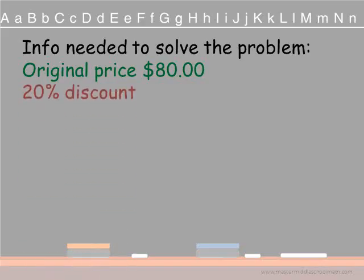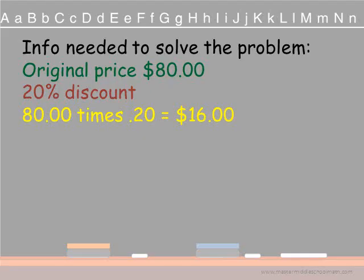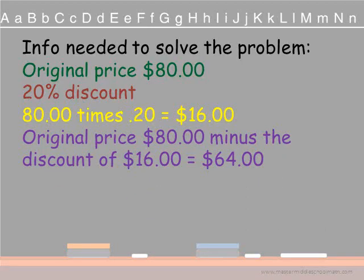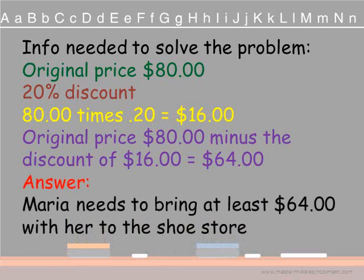Here is the information we need to solve this problem. The original price is $80. The discount is 20%. A discount means that you are going to take away from the original price — your new price will be smaller than the original. Remember that, because whenever you are doing a problem, if your new answer is bigger than the original, you don't have a discounted price. So we are going to solve this by saying 80 times .20 — we change our 20% into a decimal number — that gives us $16. Are we finished? No. Remember, a discount is taken away from our original. So $80 minus the discount of $16 gives us a new discounted price of $64. Maria needs to bring at least $64 with her to the shoe store.